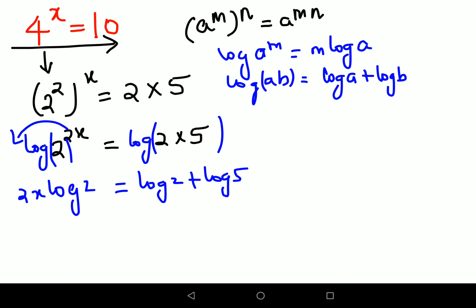Now in order to find just the value of x, we will first divide both sides by log 2. So now if you look closely, this is cancelling. And here, please don't make the mistake of cancelling these two. Why? Because there is a plus involved.